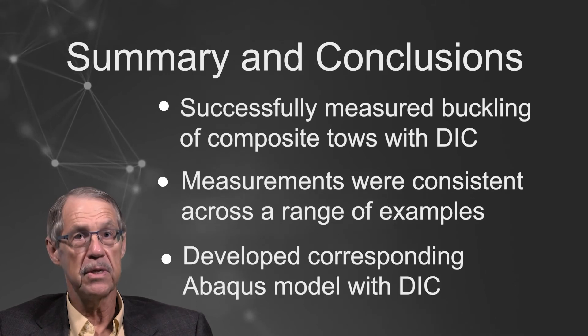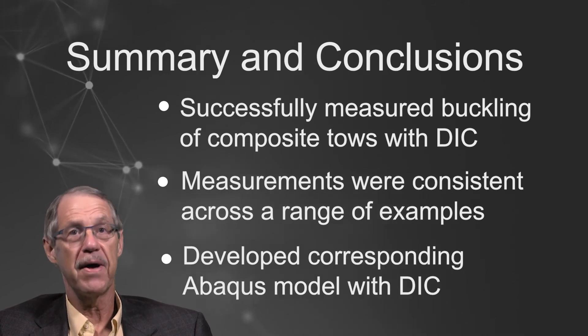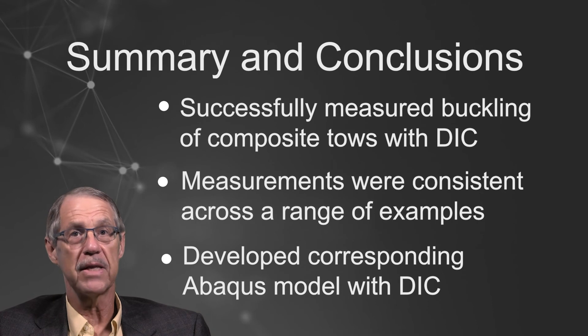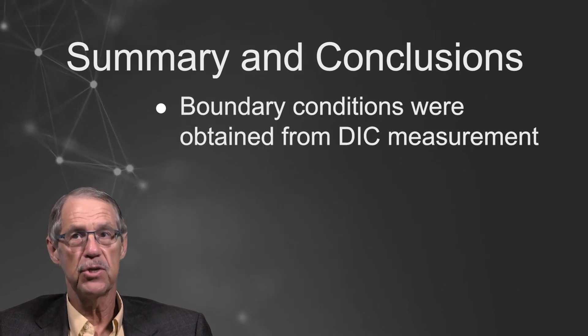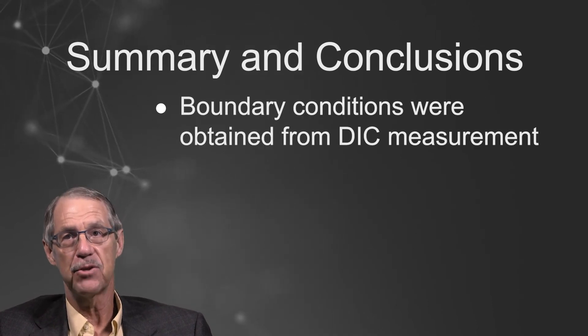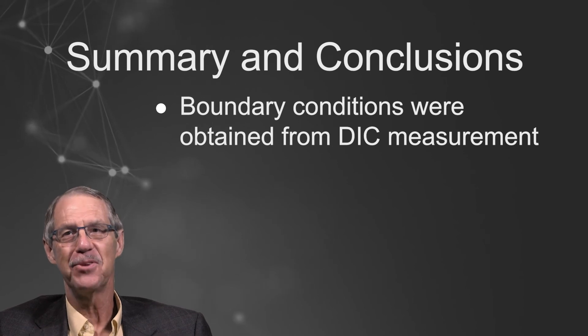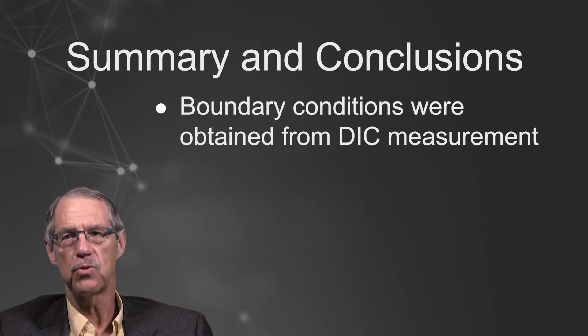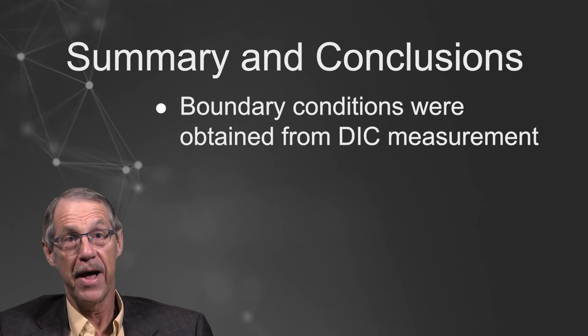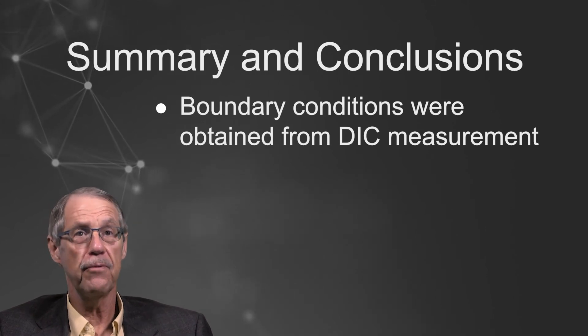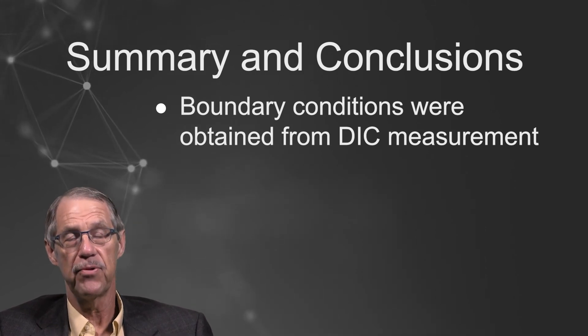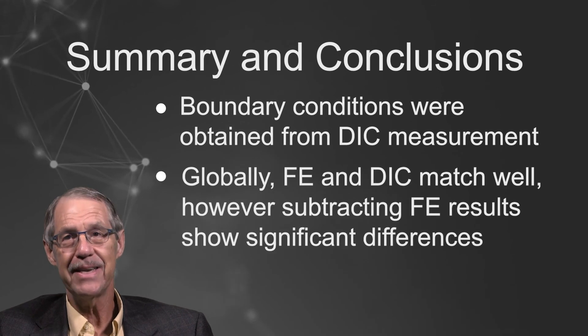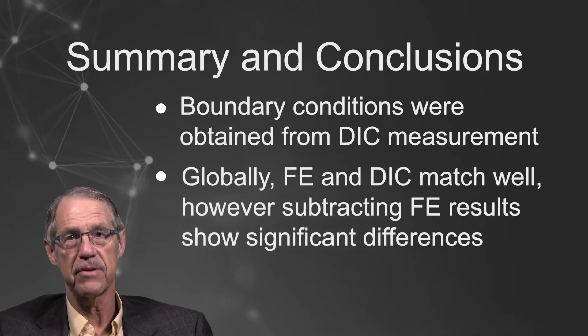For comparison, a simple elastic ABACUS finite element model using quadratic shell elements was developed. The boundary conditions were obtained from the DIC measurements. Actually, this was done after the initial models with the nominal CAD boundary conditions showed very large differences when compared to the measurements. When comparing the modified ABACUS predictions with the full field DIC results, we obtained virtually identical displacement fields when looking at the global effects.